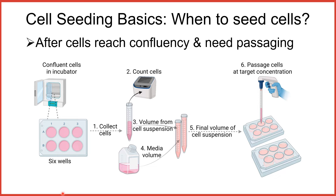As shown, during passage the cells are removed from the incubator. Once the cells are in suspension, we count them as shown in step 2. Some of the cell suspension volume, step 3, will then be diluted with fresh media, step 4. The cell seeding calculation is done to know how much of each to make a mixture with a final volume, shown in step 5, to passage the cells onto wells at a target concentration, that is step 6.